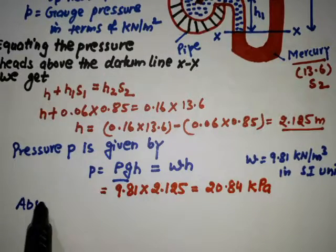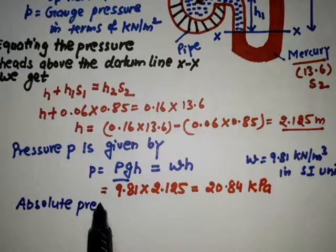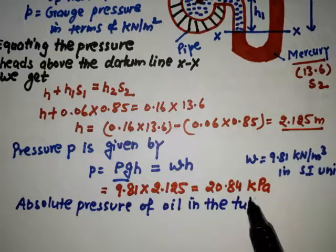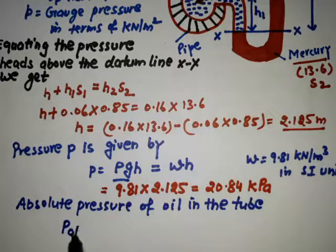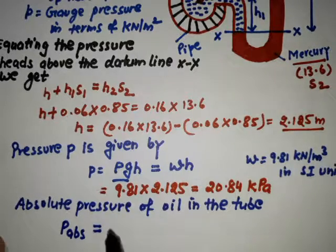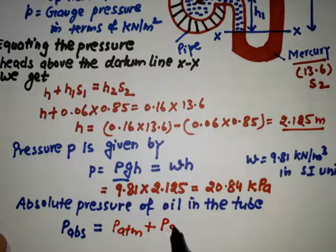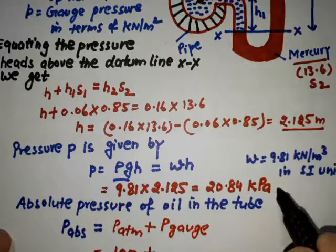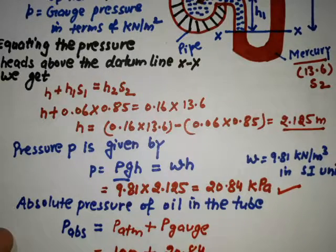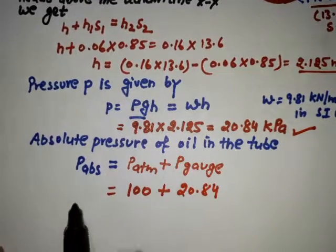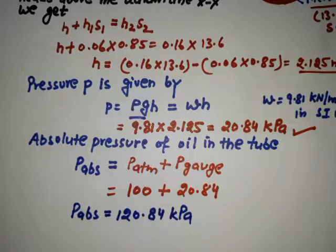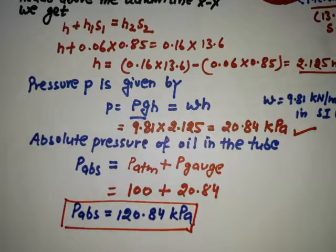Now finding the absolute pressure of oil in the tube. Since this is positive pressure, P_absolute = P_atmospheric + P_gauge. P_atmospheric = 100 kPa and P_gauge = 20.84 kPa. Therefore, P_absolute = 100 + 20.84 = 120.84 kPa. This is the final answer.